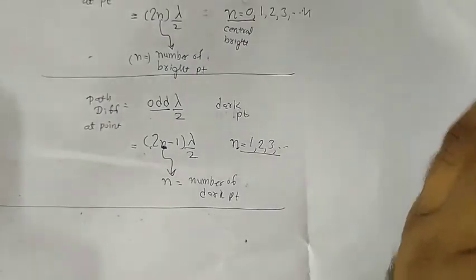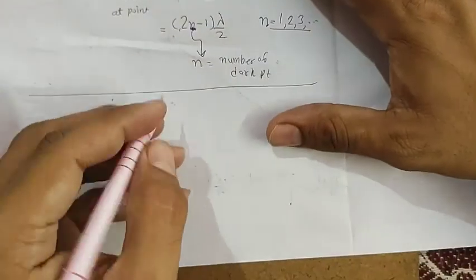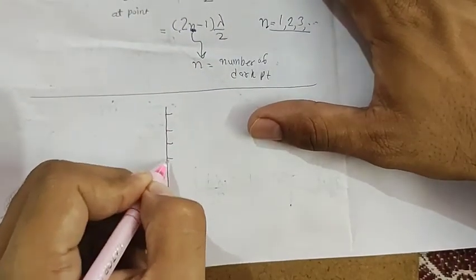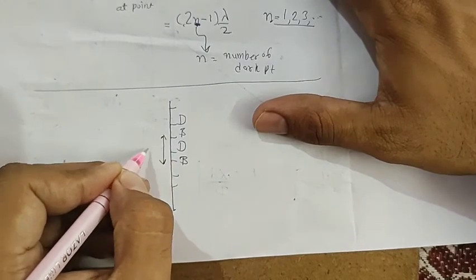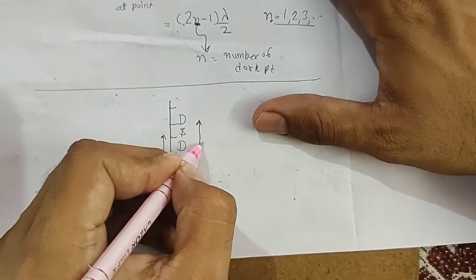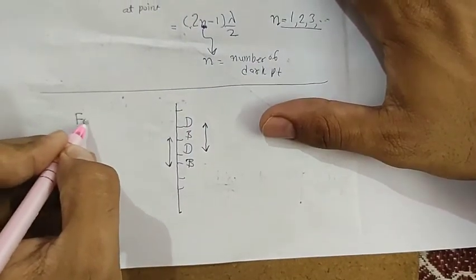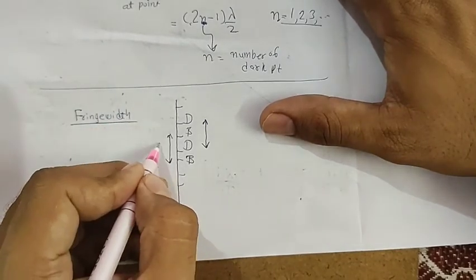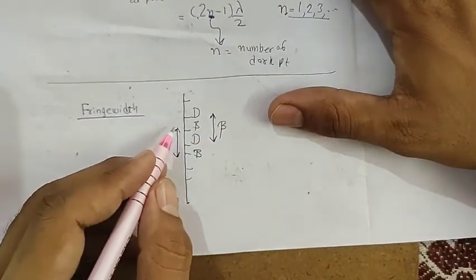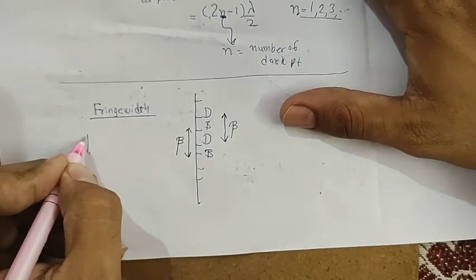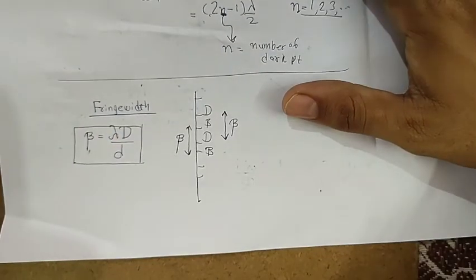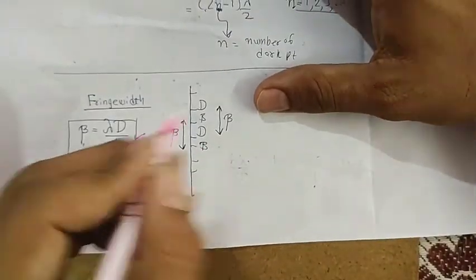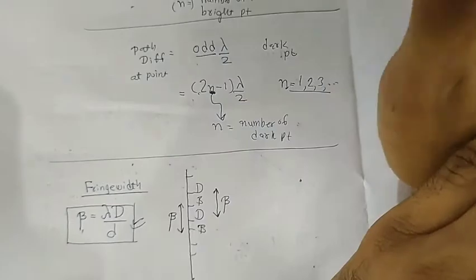These are the formulas from Young's Double Slit Experiment that you should keep in mind. The distance between successive bright points, or successive dark points, is called fringe width, denoted by beta β. The formula for fringe width is β = λD/d. These are textbook-level simple formulas which every student should know.